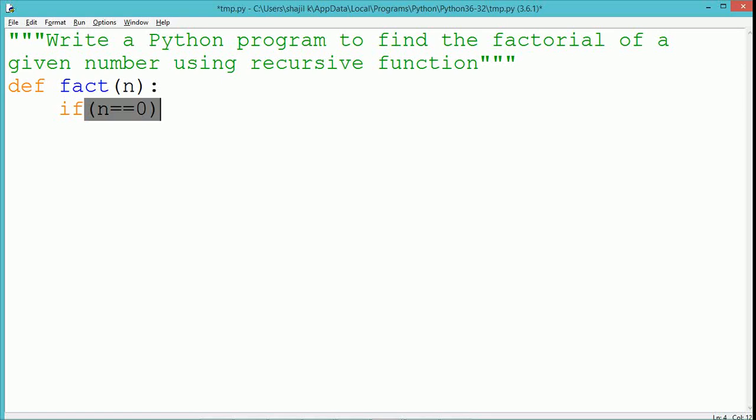Within the fact function, the logic for finding the factorial of a number is written. We first check whether the number is 0. If the number is 0, the factorial of 0 is 1 which will be returned.